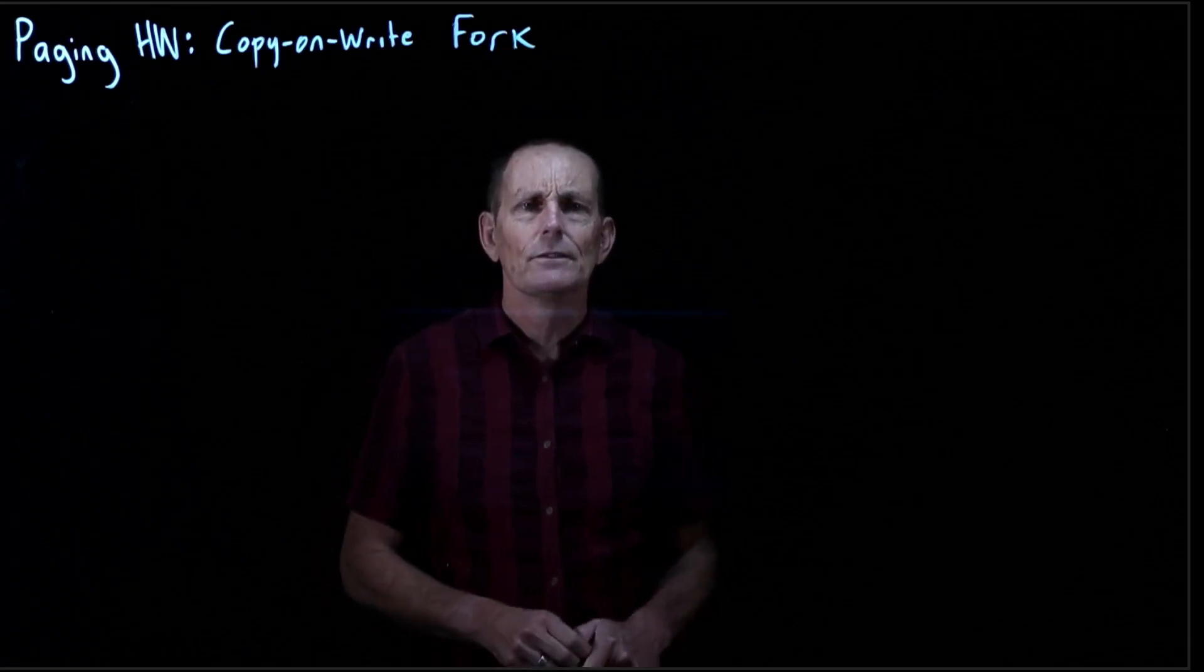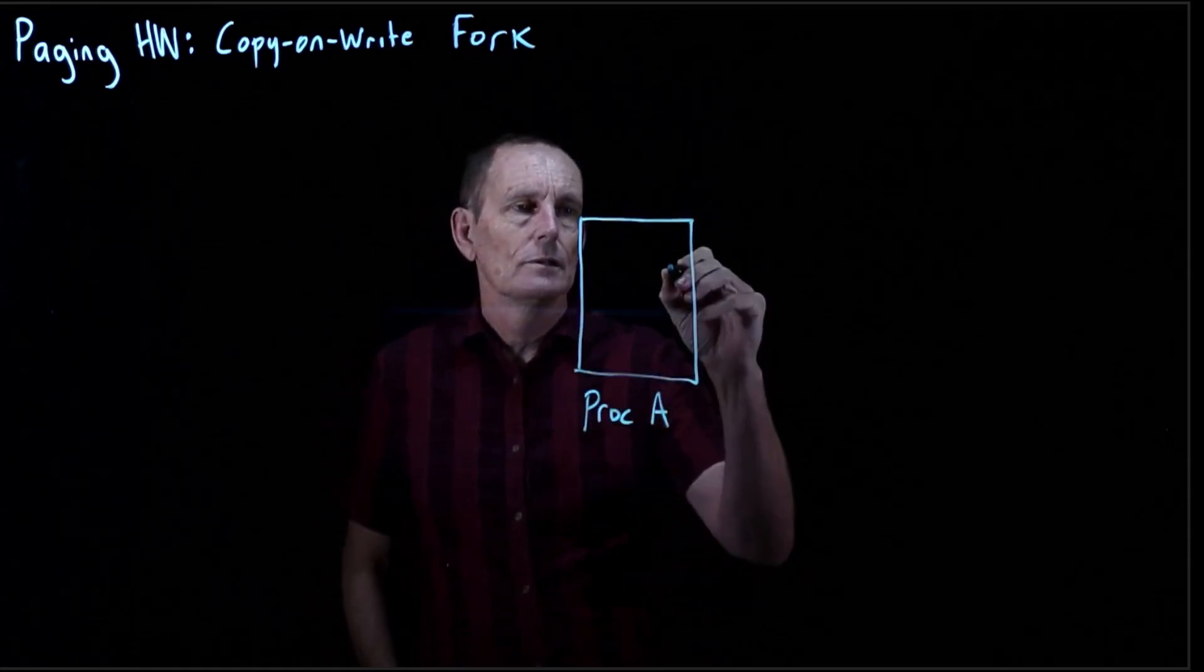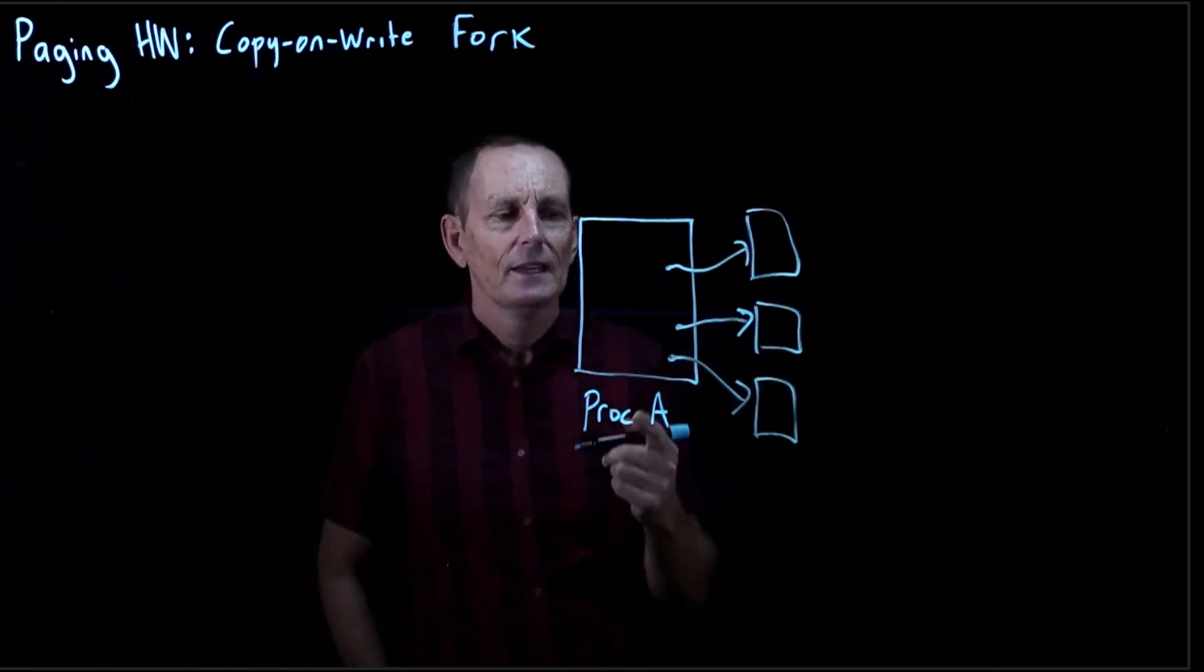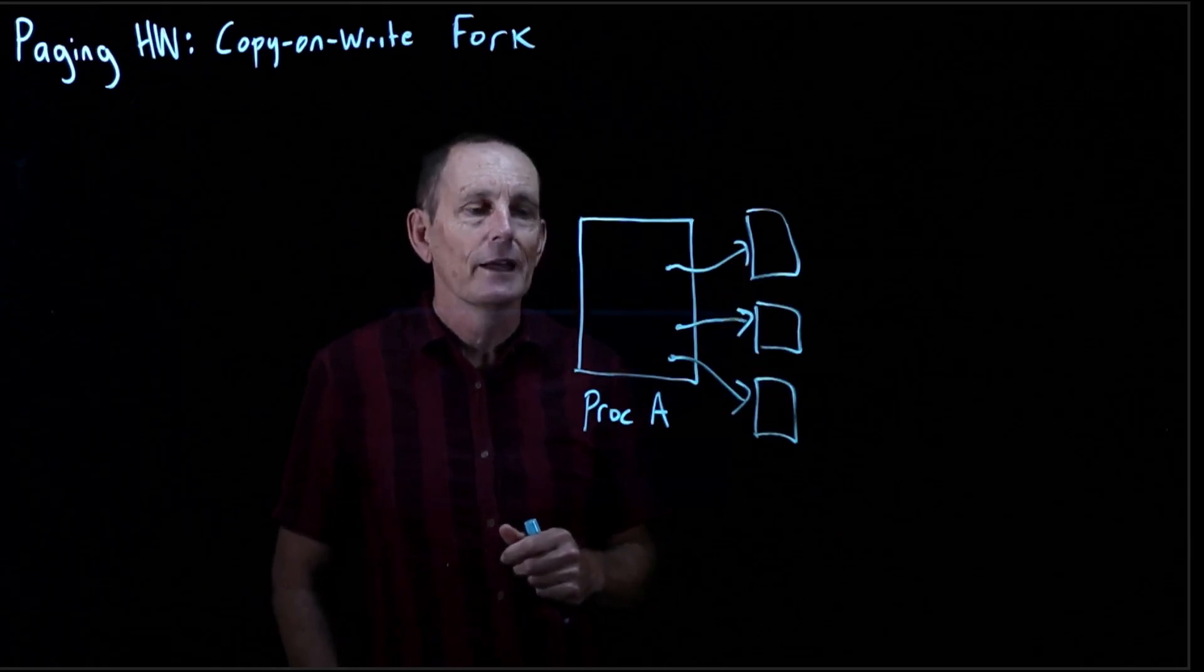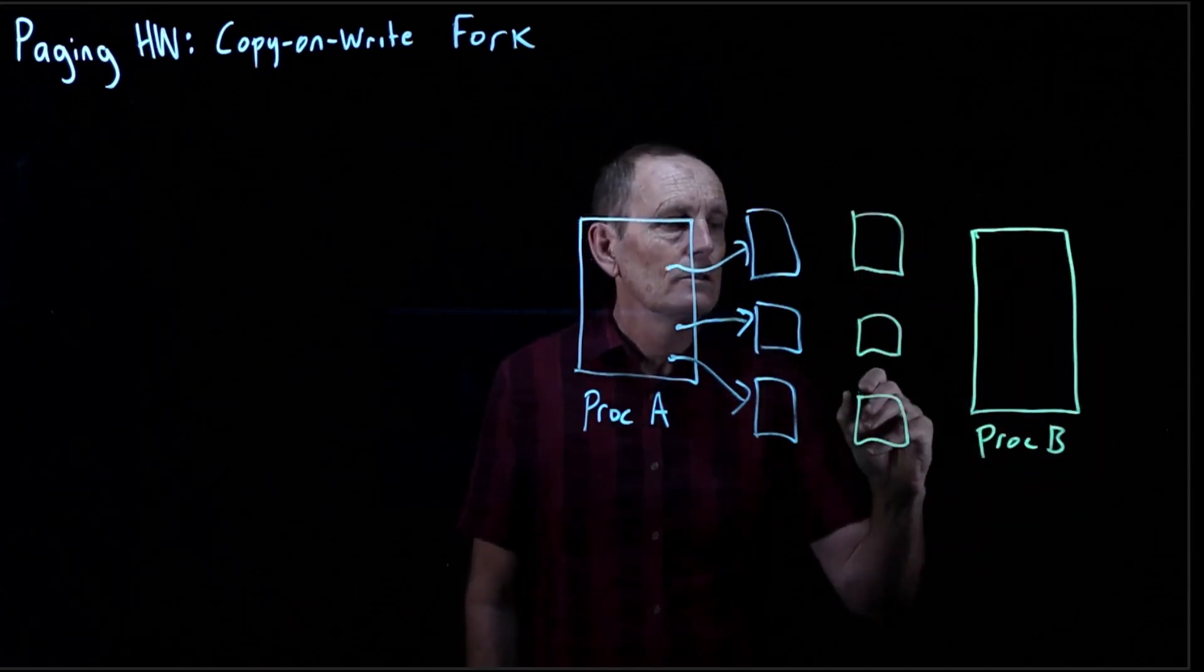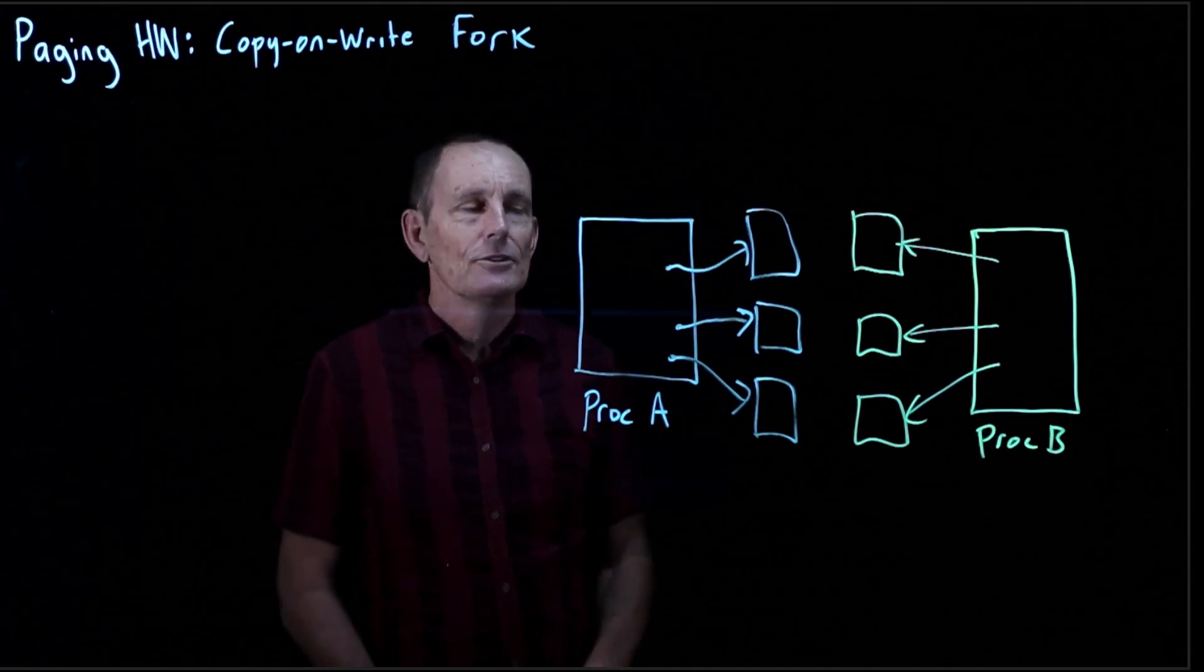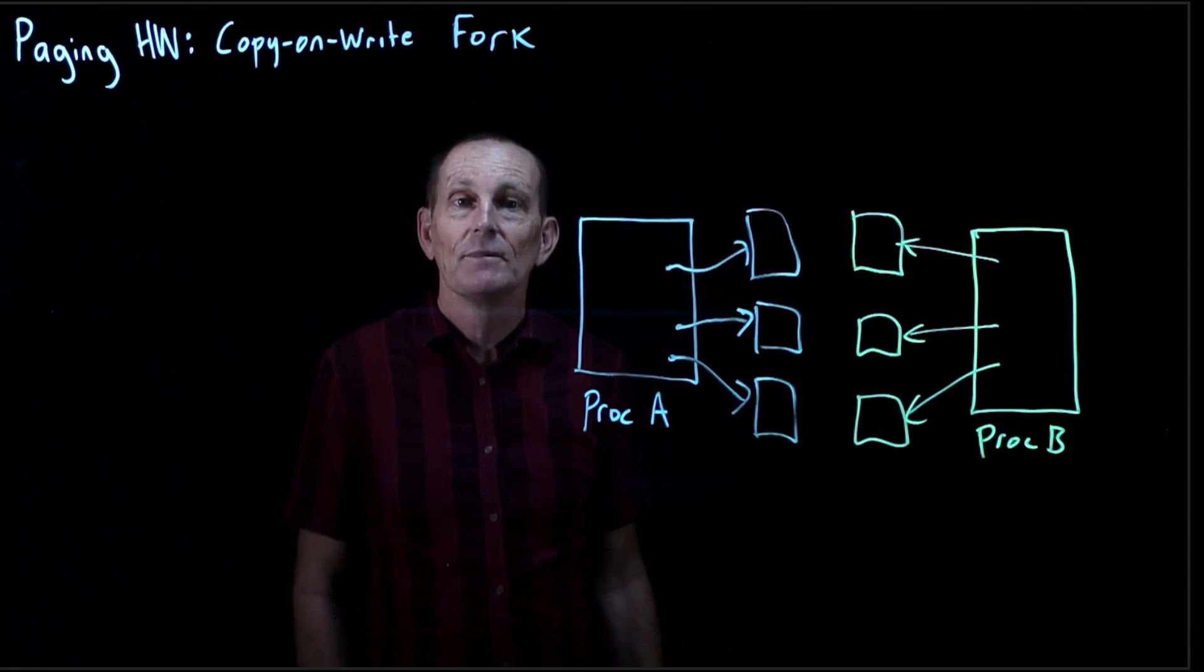So let's look first at a normal fork. So we have process A, and it has three pages. If we do a fork, then what are we going to get? As we'd expect, we get a duplicate of process A. So we duplicate all of its pages, and that's great.